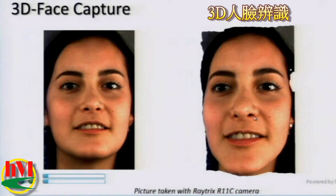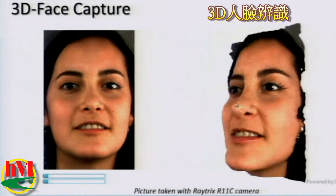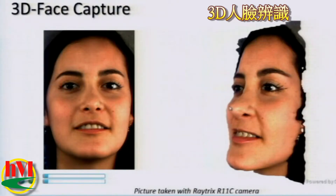It wouldn't work on a homogeneous surface — that doesn't work — but you can always project a pattern, any kind of pattern, and then again it works. You can now use this additional depth information to do some nice image processing on the fly using this depth map in addition to your 2D image.